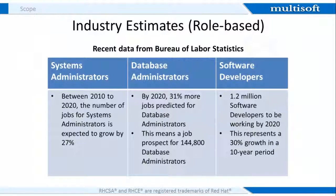According to the latest data from the Bureau of Labor Statistics, systems administrators earned on average close to $70,000 annually, with 9 out of every 10 systems administrators working full-time. From 2010 to 2020, the number of jobs available for system administrators is expected to grow by 27%, which is way faster than the average job growth for all occupations during the same period.